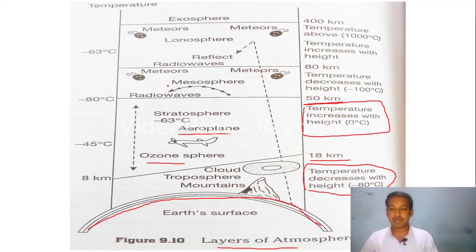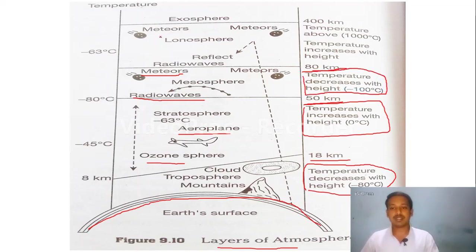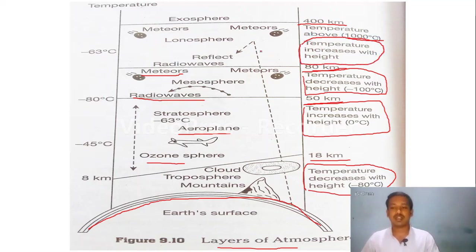The next layer is ionosphere — it is up to 400 km, temperature is above 1000 degrees Celsius, and temperature increases with height. The last layer is exosphere. Please remember all these points — a question will definitely come from here.